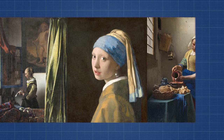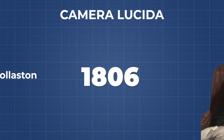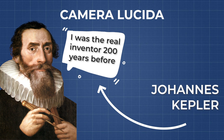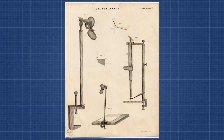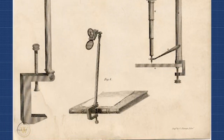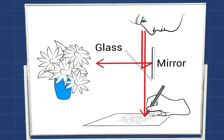Artists like Vermeer were thought to have used this technique. We also have the camera lucida, which was invented in the early 19th century. Sir William Hyde Wollaston is often credited with its invention in 1807, although there were similar devices before that time. Its design used a prism to project an image of an object onto a surface, making it easy for artists to trace and reproduce the scene accurately.